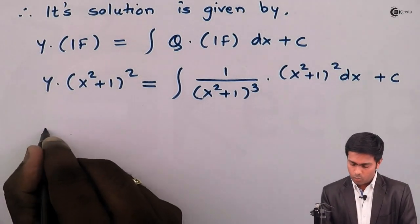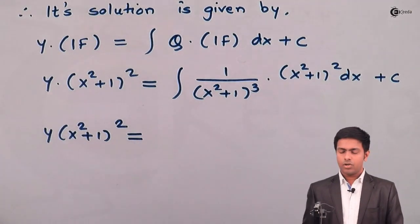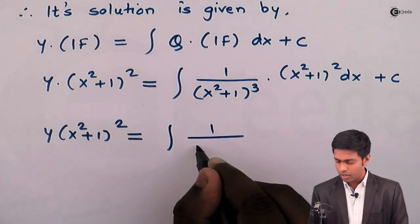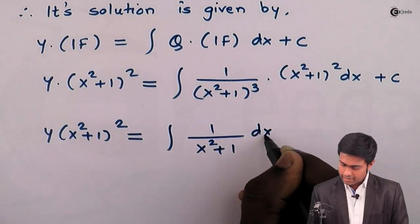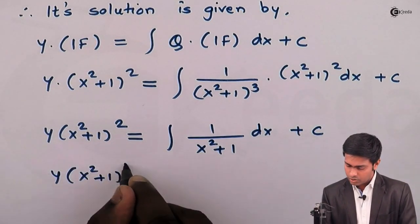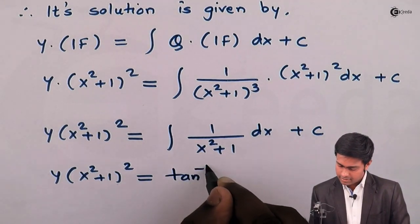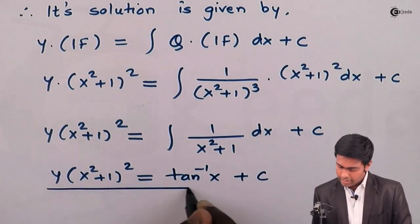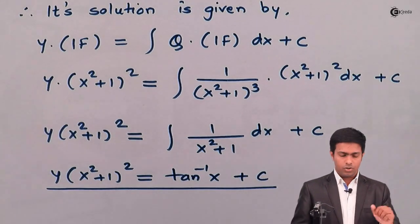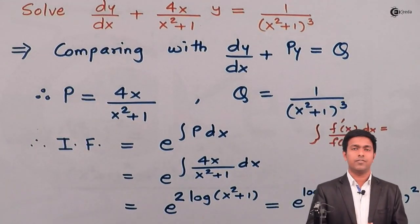So this gives y × (x² + 1)² equals — the square in the denominator and the square from the integrating factor cancel — leaving the integration of 1/(x² + 1) dx + C. The integration of this term is tan⁻¹(x) + C. So y × (x² + 1)² = tan⁻¹(x) + C is the solution of the linear differential equation.